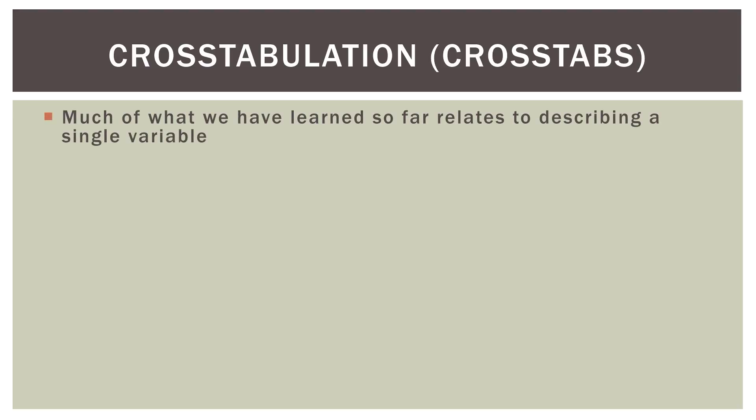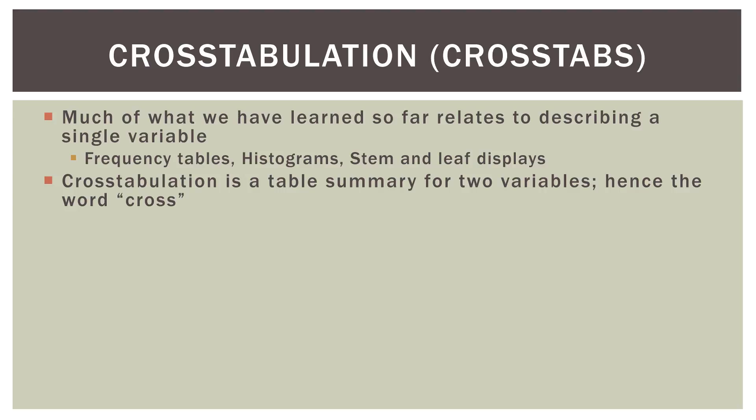In this video, we will talk about how to summarize two variables simultaneously. Another name for this is called cross tabulation, or cross tabs for short. So much of what we have learned so far in this playlist relates to describing a single variable — frequency tables, histograms, stem and leaf displays, et cetera. Now cross tabulation is a table summary for two variables at the same time. Hence the word cross — two variables where they intersect.